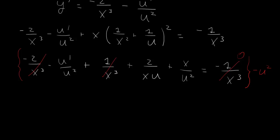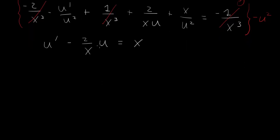We multiply both sides by minus u squared and get u prime, and this term becomes a linear term: minus 2 over x times u. And this term, x over u squared times minus u squared, becomes minus x. Throwing that term onto the right-hand side gives plus x. So what we have now is a very nice first-order linear equation to solve.